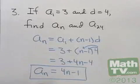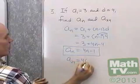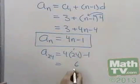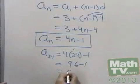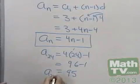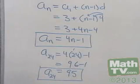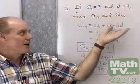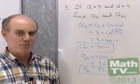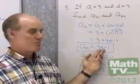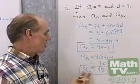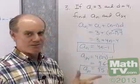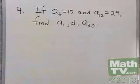Now I want to find the 24th term, a sub 24. That will be 4 times 24 minus 1. 4 times 24 is 96, minus 1 is 95. So a sub 24, the 24th term of that sequence, is 95. If I'm given the first term and the common difference, I can find the value of any term. The nth term simplifies to 4n minus 1, so the 24th term is simply 4 times 24 minus 1, which gives me 95.